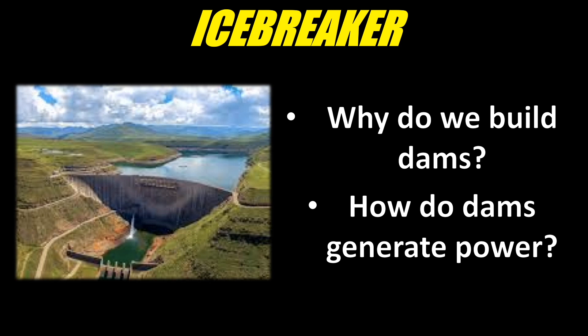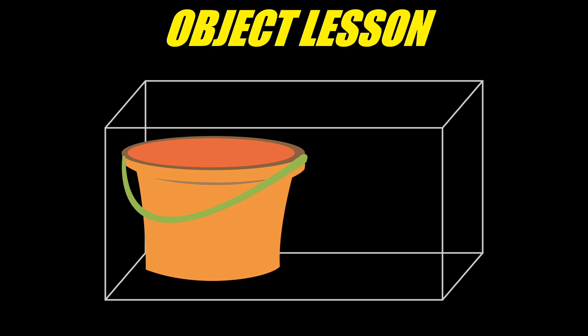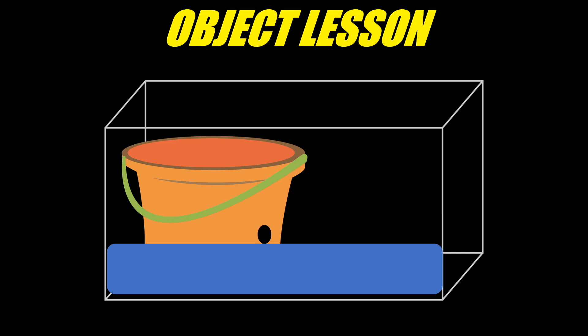If you were teaching a younger audience, you could turn this into an object lesson. You'd need two watertight containers — one small, one big. Use a milk jug or ice cream bucket for the small container and a see-through storage bin for the other. Fill the smaller container with water, place it in the bottom of the storage bin, and tell them it represents a lake held back by a dam. Poke a hole in the bottom and let them watch the water flow until it finds balance in the larger container. Point out that power is being generated in the flow — you can see it pushing out and creating waves and ripples.